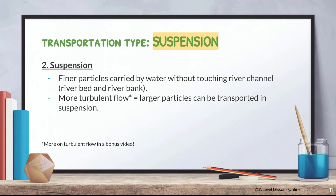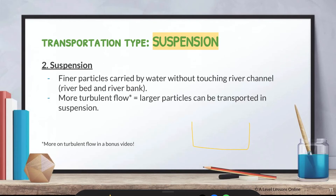Suspension is fine particles carried by water without touching the river channel — similar to attrition in that they don't touch the riverbank or river bed. When there is more turbulent flow, larger particles can also be transported in suspension. Think of it like this: particles are suspended in the water, floating along with the river current without touching anything.